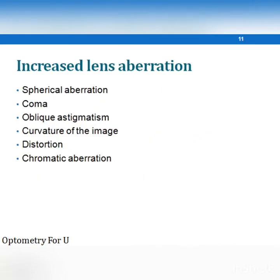The aberrations encountered with high power lenses include spherical aberrations, coma, oblique astigmatism, curvature of field, and distortion — especially pin cushion distortion — as well as chromatic aberration, which are common types of aberrations seen in high power lenses.